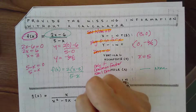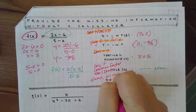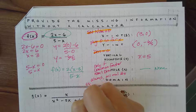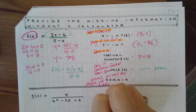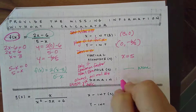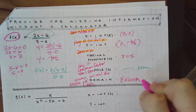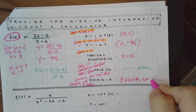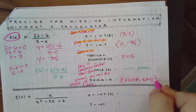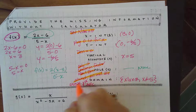Domain is always going to be all real numbers except for your vertical asymptote and any hole. I'm going to write this in set notation: all real numbers where x doesn't equal — and then you look up at your vertical asymptote, which is 5. Since we didn't have any hole, we don't have to worry about that. So my domain is all real numbers except for 5.